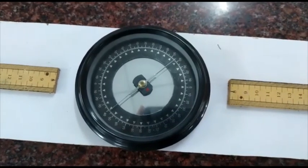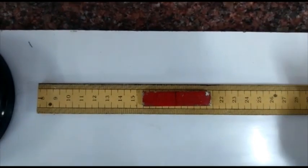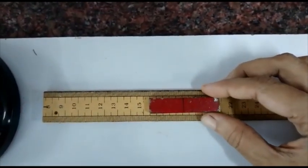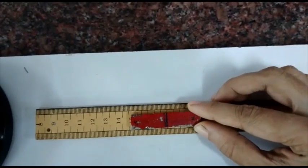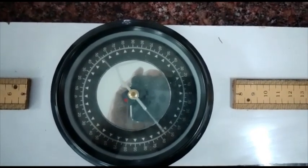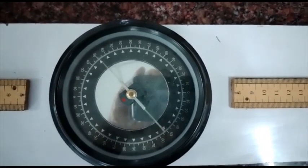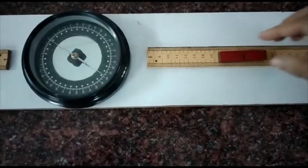Now reverse the polarity of the bar magnet at the same distance. Note down the readings from the deflection magnetometer. This can be taken as theta 3 and theta 4.